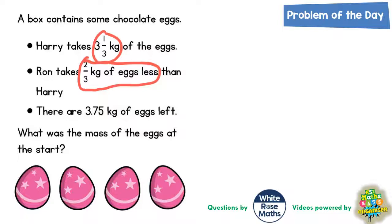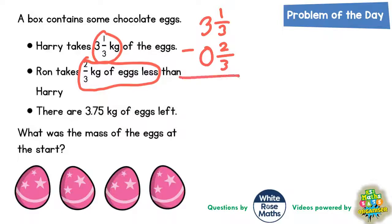So if we do three and a third take away two thirds — well, two thirds is like no whole kilograms and two thirds, so two thirds is just no whole ones and two thirds. Let's see where we get: one third subtract two thirds — we can't do that, so we'd have to borrow.